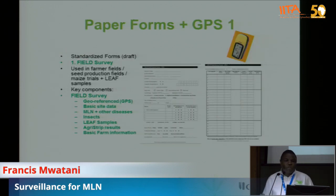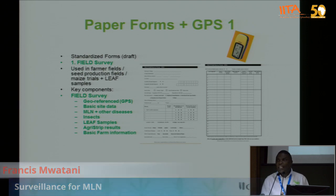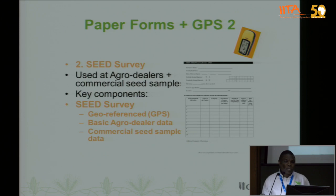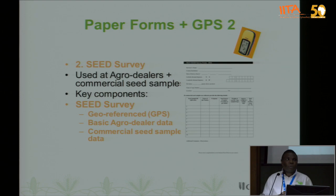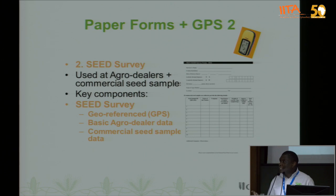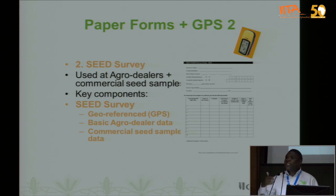For an overview of the manual process, you can develop a checklist — which is a form — and then use GPS equipment. In MLN surveys, we categorize them into three types because of the different conditions: one for farmers' fields, one for seed fields, and one for agro-dealers — those who are selling the seed.